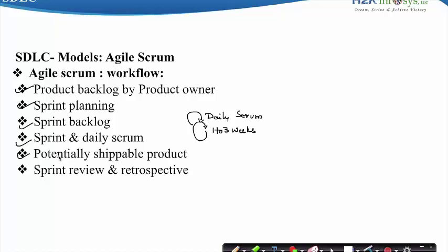The Product Owner can decide whether the product is ready to be shipped or whether any additional features could be added. At the end of the Sprint, in a Sprint Review, the team showcases their work to the Product Owner. In a Retrospective, the team works on what they can do to improve the process. This workflow is repeated for every Sprint.